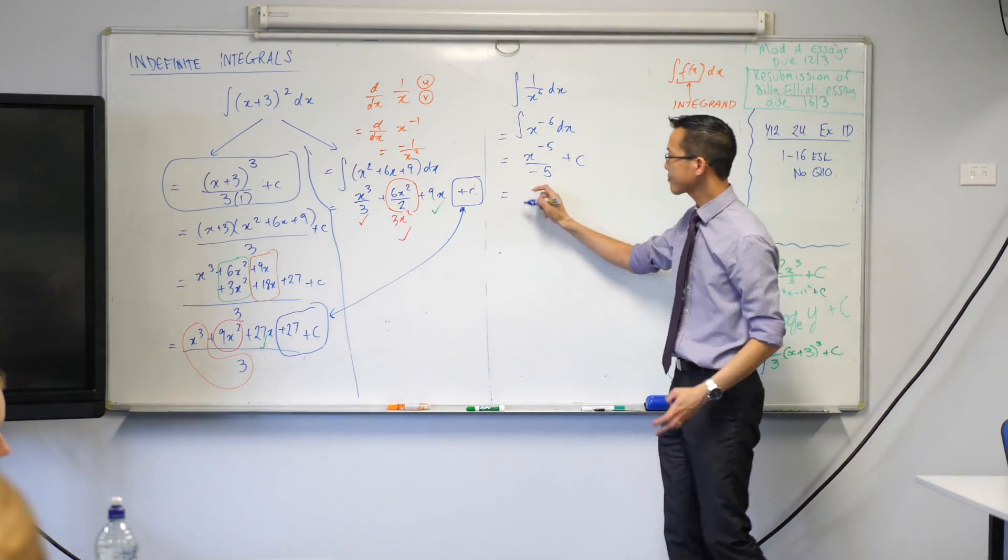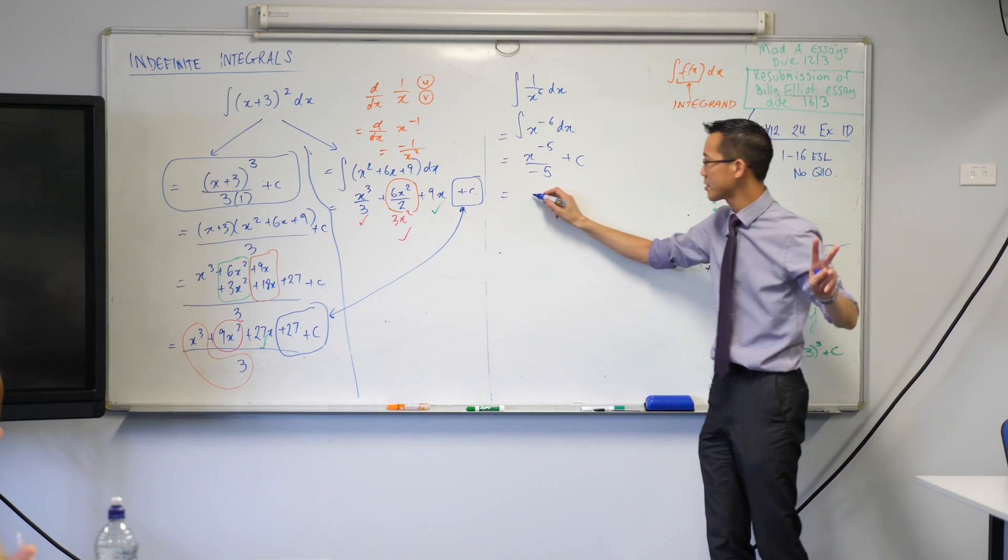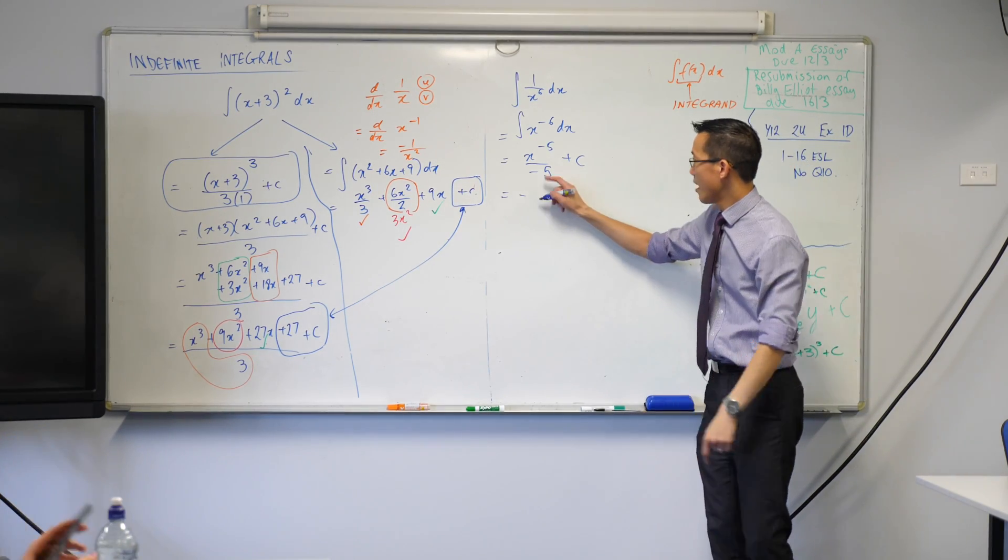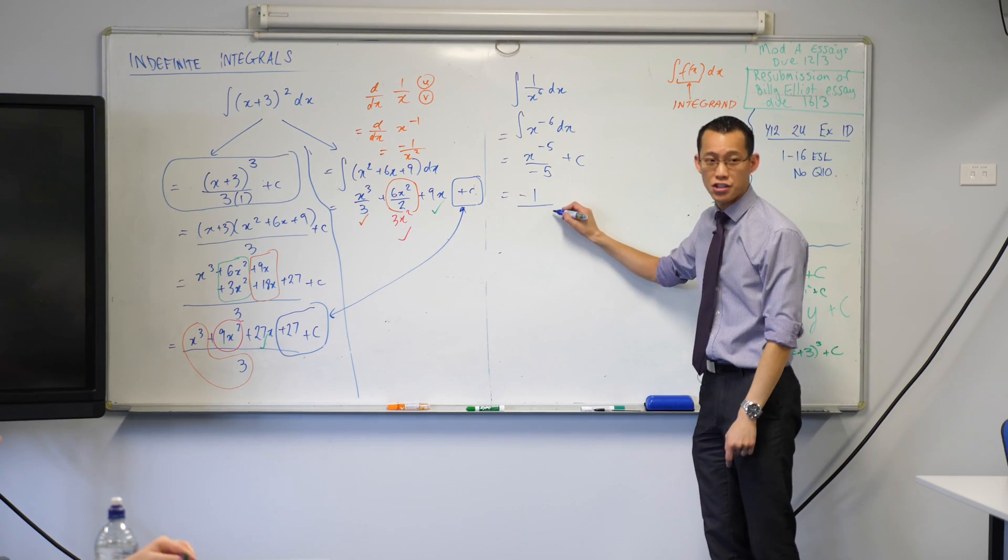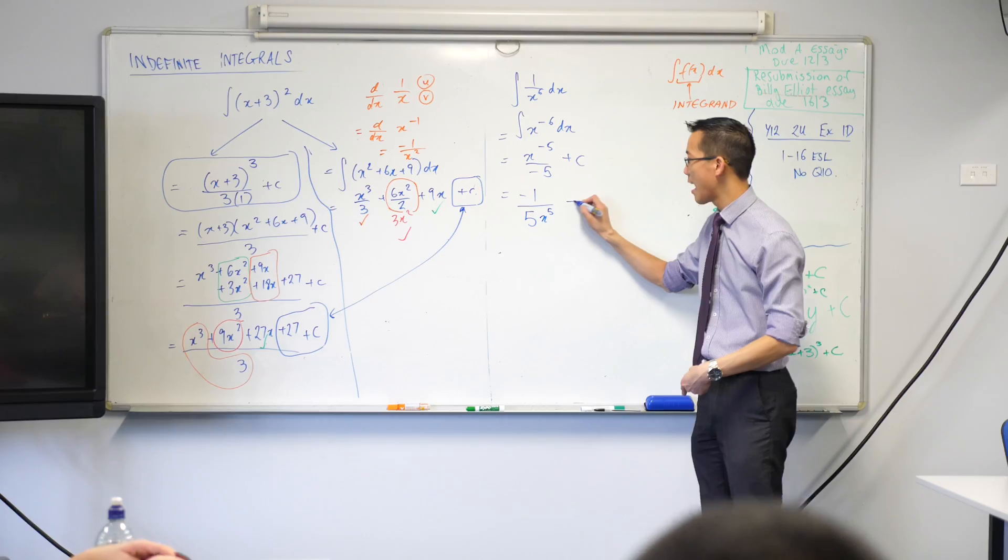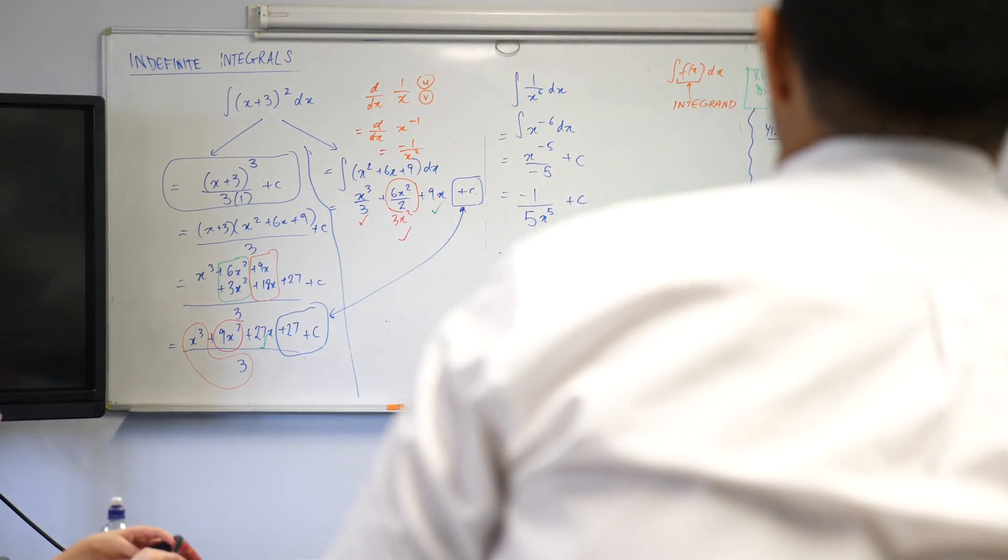So I would encourage you to tidy this up in two ways. Put the negative up the top. This really is division, right? So on your denominator, there should be a 5 and an X to the 5, plus your old constant that you've got left there, okay?